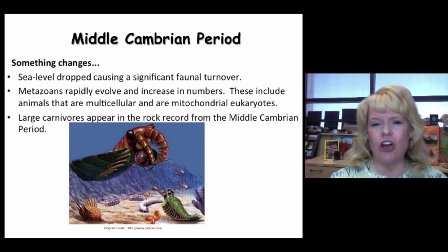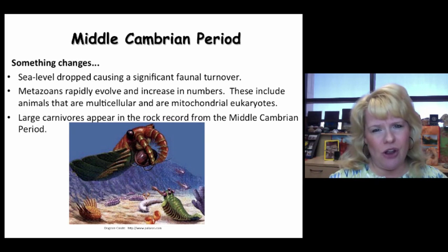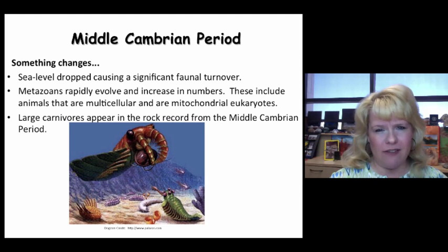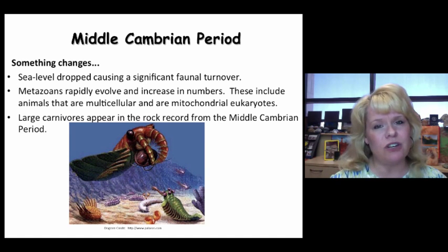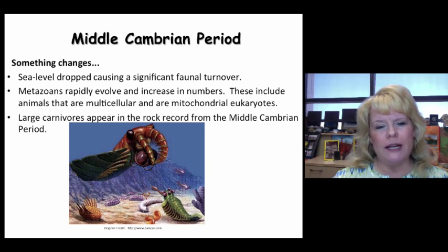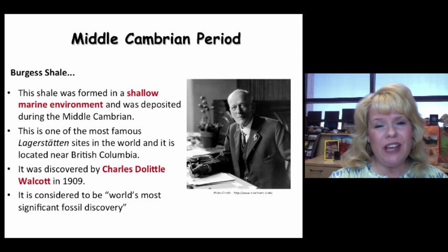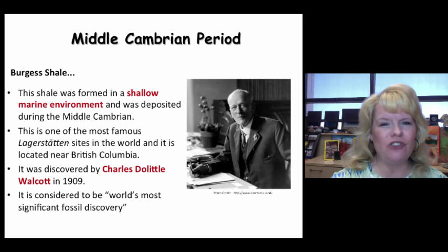In the middle Cambrian, large carnivores appeared in the marine environment. To be clear — there are no animals on land yet, no plants, nothing. Everything is in the ocean at this time, so we're strictly talking marine. We can't discuss the middle Cambrian without bringing up the Burgess Shale.